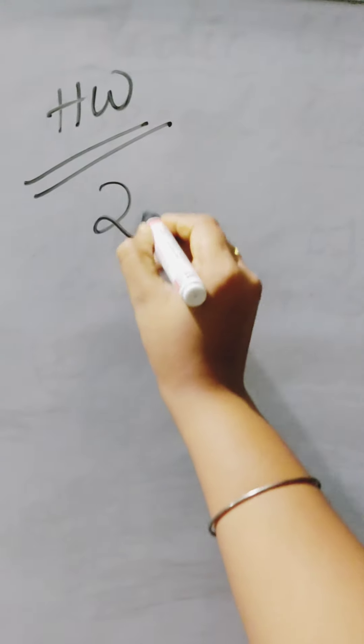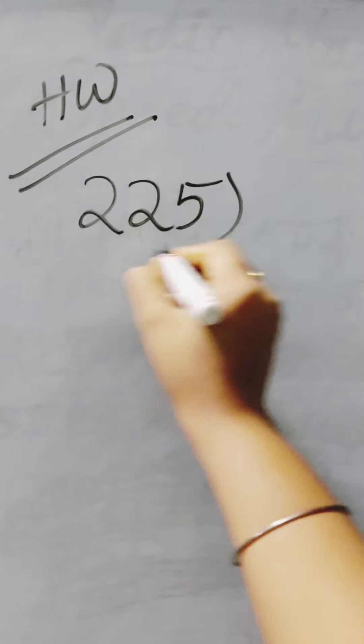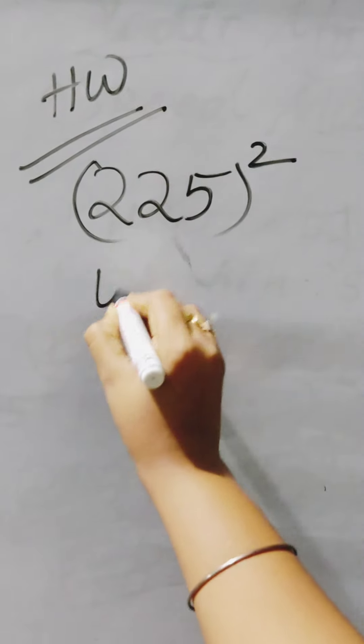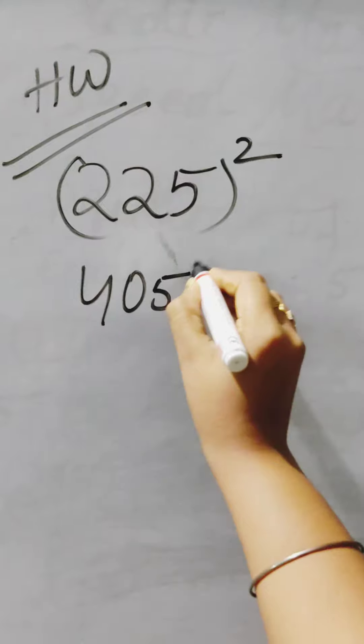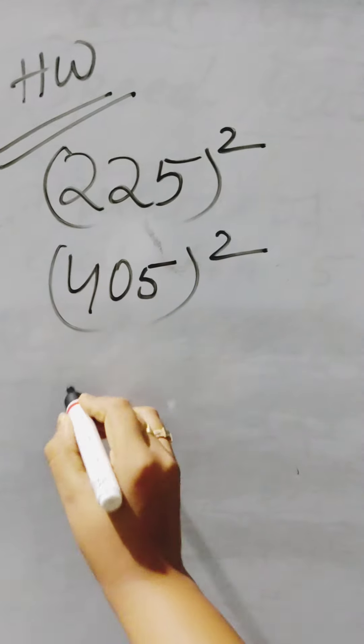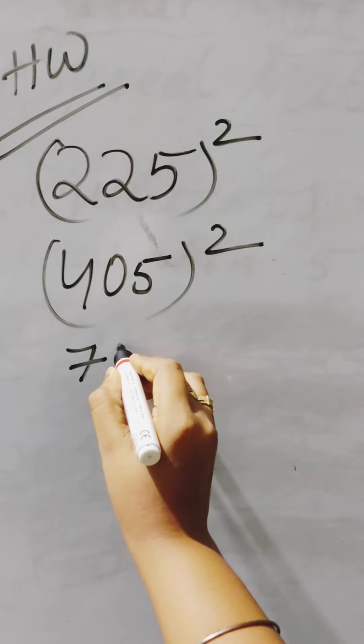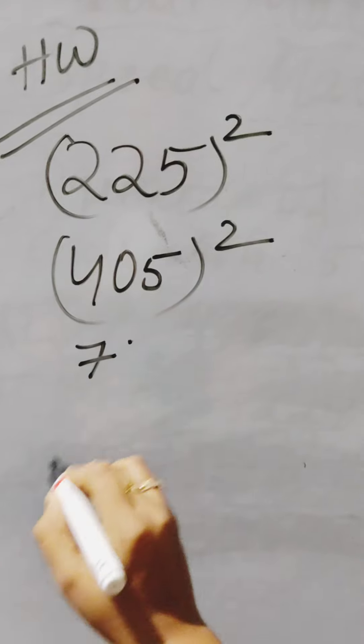In this process, you can find any big numbers' squares which is ending with 5. Now, these are some homework problems for you people. Kindly do this homework and write down in the comment box.